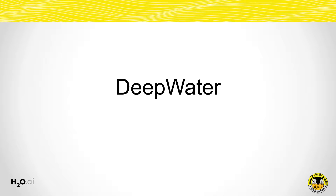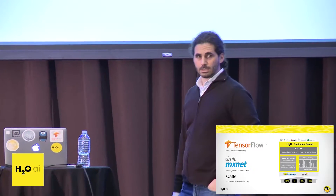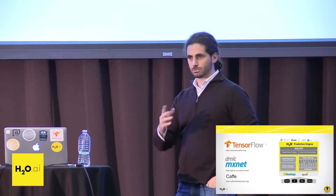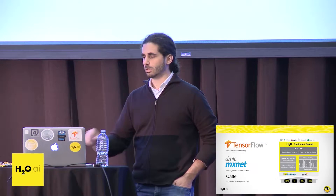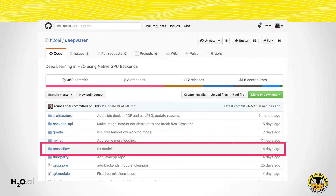The objective is to have TensorFlow, Caffe, and MXNet completely integrated under an abstraction layer. MXNet is the one that has the most advanced development at this stage and is what the next presentation will actually show in code execution. The second one is TensorFlow, which was started in July. This is all open source, so you guys can go and contribute — contributions are welcome.